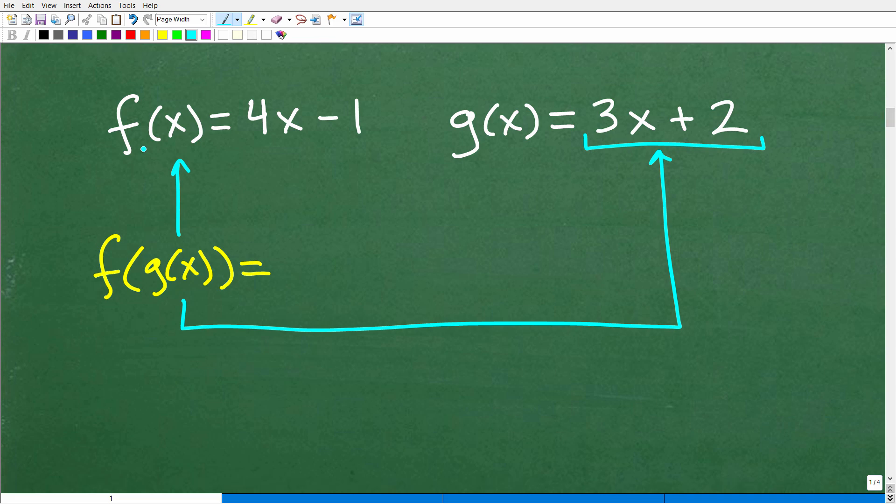So here is our function f(x) is equal to 4x minus 1. And if I want to find the composite function, f(g(x)), what I'm stating is I want to plug in the g(x) function into this function, the f function. Okay. So we've got to be clear about this.